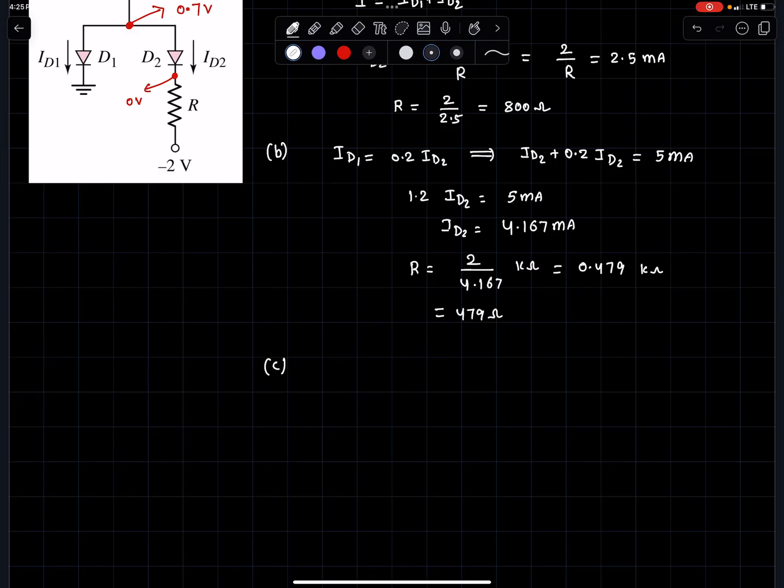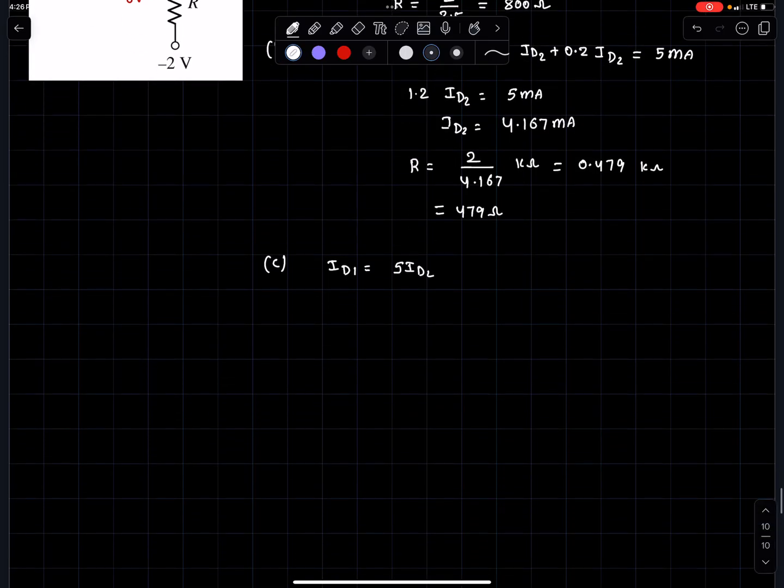In part (c), id1 equals 5 times id2. This is simple. Now 6 times id2 must equal 5 milliamperes, so id2 is 5 over 6 milliamperes.